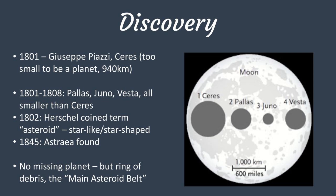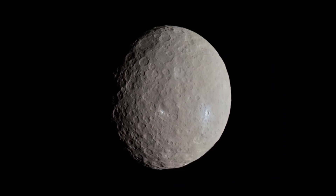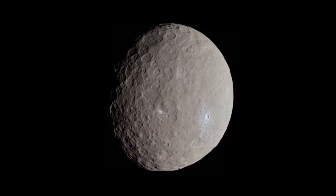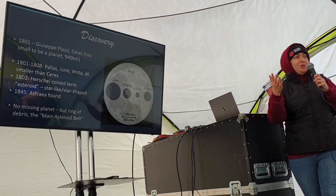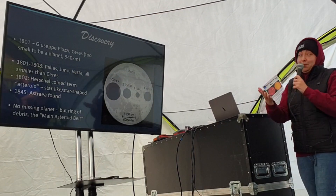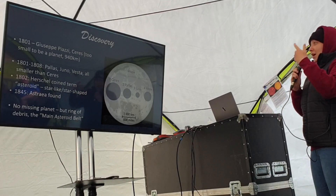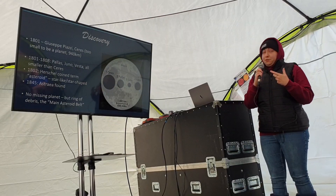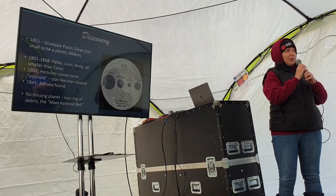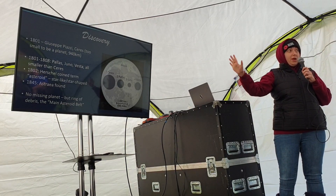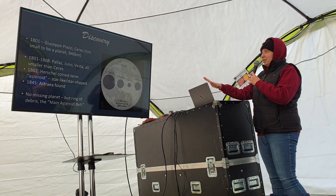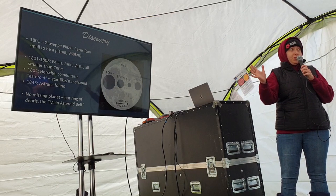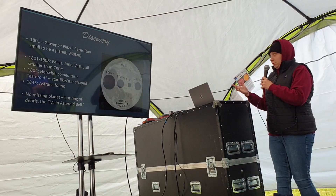So in 1801, Giuseppe Piazzi found Ceres at the predicted location roughly in between Mars and Jupiter. But at 940 kilometers across, they were like, it's too small to be a planet. Over the subsequent years, more of these small bodies were found at this location between Mars and Jupiter, where the Titius-Bode law was predicting them to be found. We've got Pallas and Juno and Vesta, all of them smaller than the first body found between Mars and Jupiter.